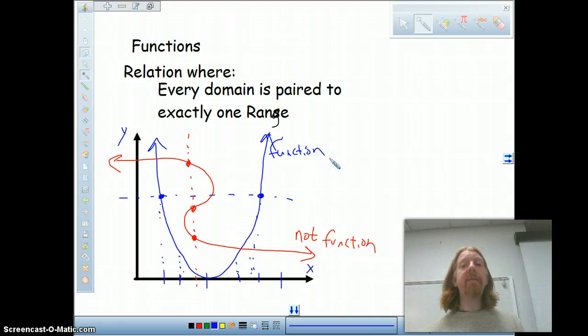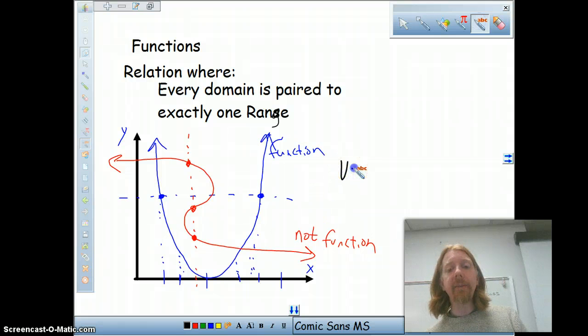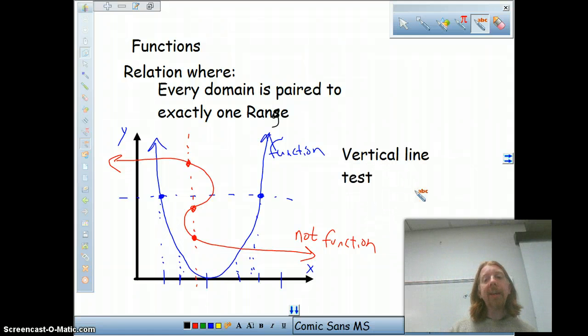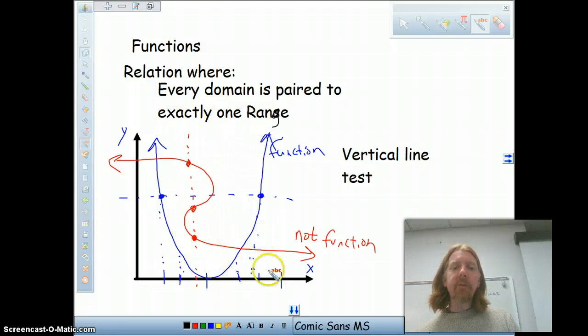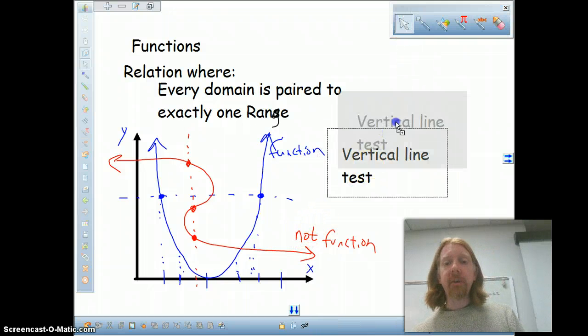This is what we call the vertical line test. This is what we refer to the idea of drawing a vertical line through the graph and seeing if it crosses the graph more than once. If I have multiple intersections of that vertical line, then I say it's not a function. If I can go the entire graph and never cross twice, only cross once, then I do say it's a function, and I can apply the function term to it.